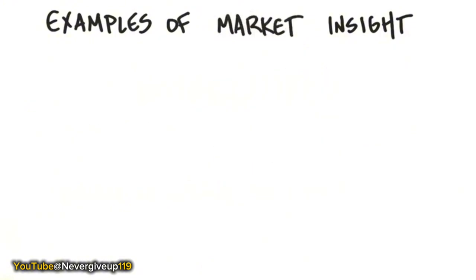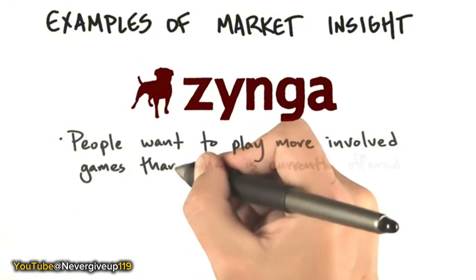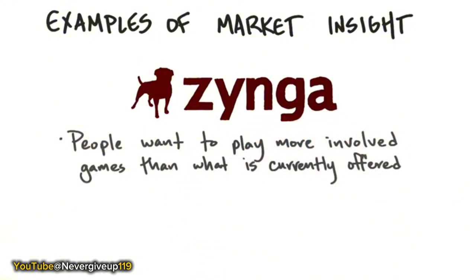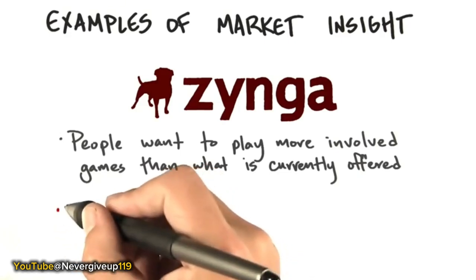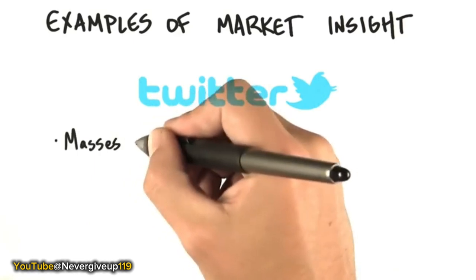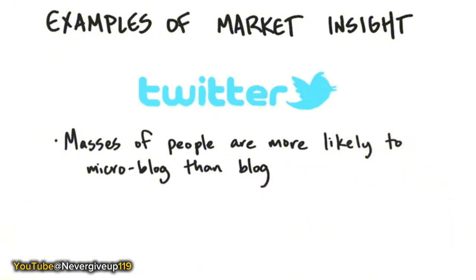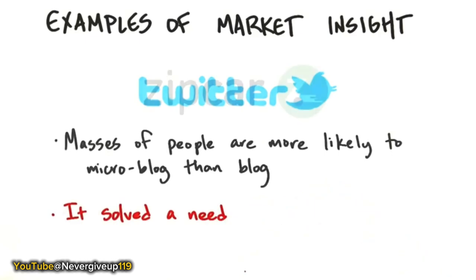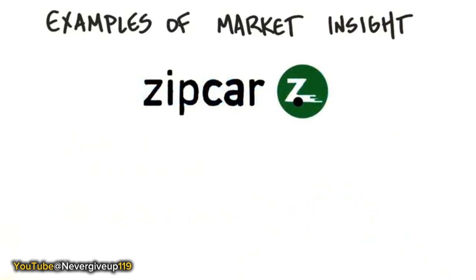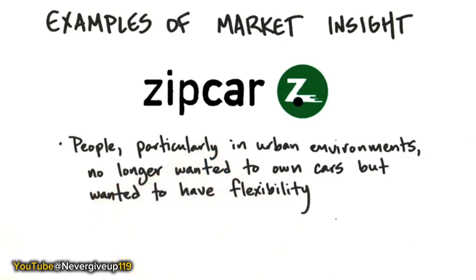There are also examples of market insight. Zynga was one of the first companies to realize that people wanted to play games online that were more involved than what was currently offered — not just solitaire, but games involving interaction with other people. Their big insight was Facebook as the distribution channel for those games. Twitter is another example: masses of people are more likely to write 140 characters than 1,000 words — everybody was skeptical, but it turned out it plugged into something that was both a market and human nature insight. Zipcar's insight was that people in urban areas or on college campuses no longer wanted to own cars, but wanted to get them with incredible flexibility — a lot more than traditional rental car companies offered — and Zipcar made it a successful public company.